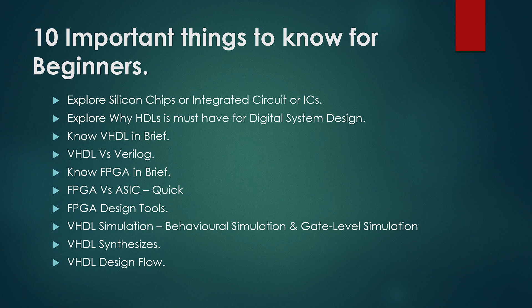Okay, enough foundation. Let's quickly start and go through them one by one. We'll start from exploring silicon chips or integrated circuits or ICs and understand their uses. Second, we'll know why HDLs are so important for digital system design. Third, we'll have a little background of HDL. Fourth, we'll give a quick comparison of VHDL and Verilog. Fifth will be FPGA briefing. Sixth, we'll give a quick comparison of FPGA and ASIC.